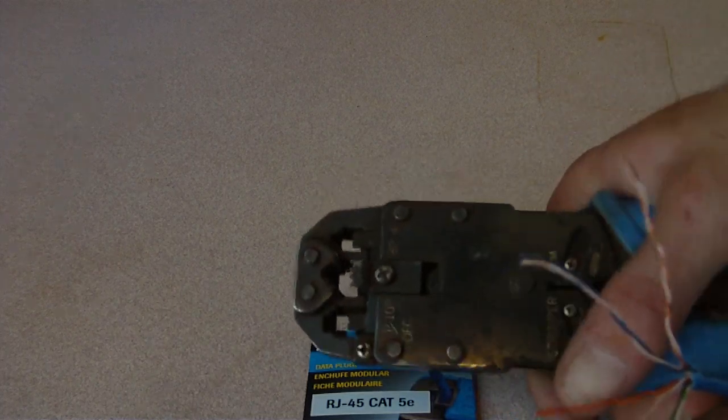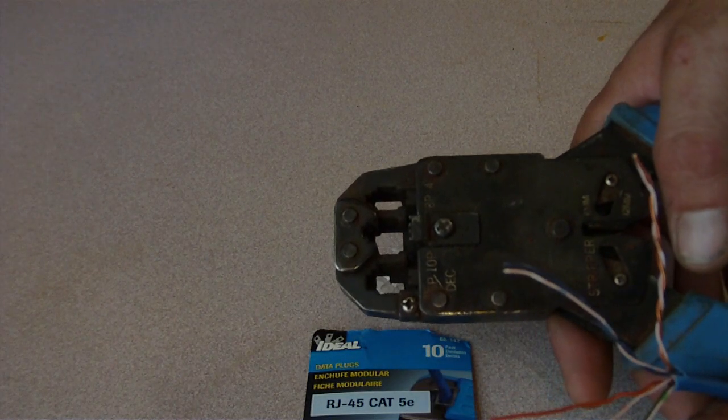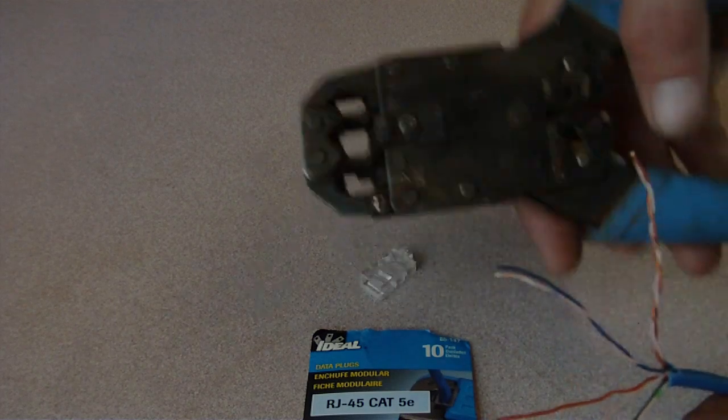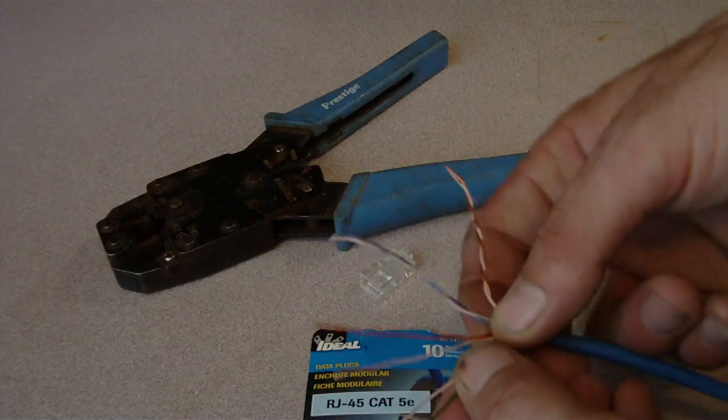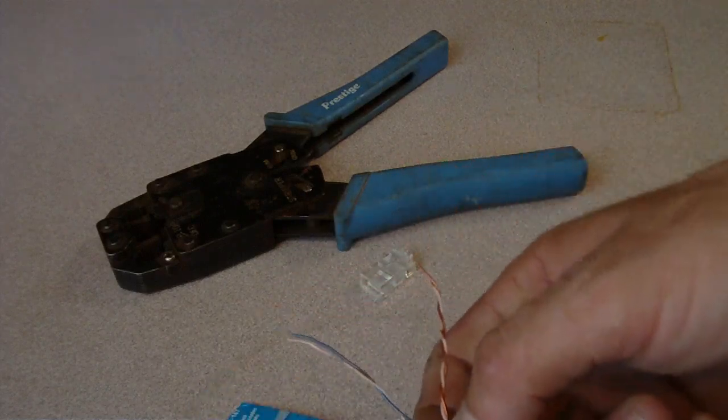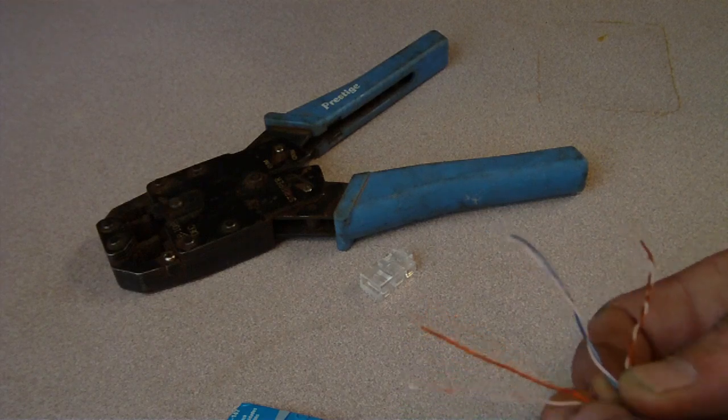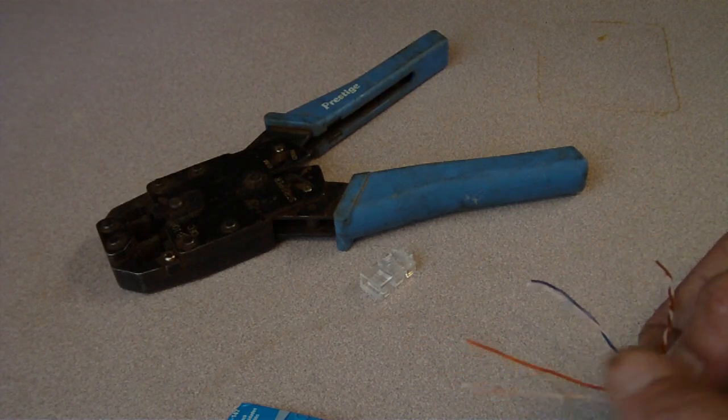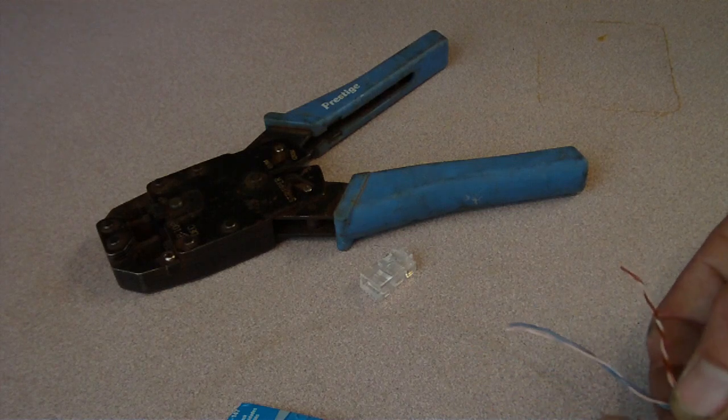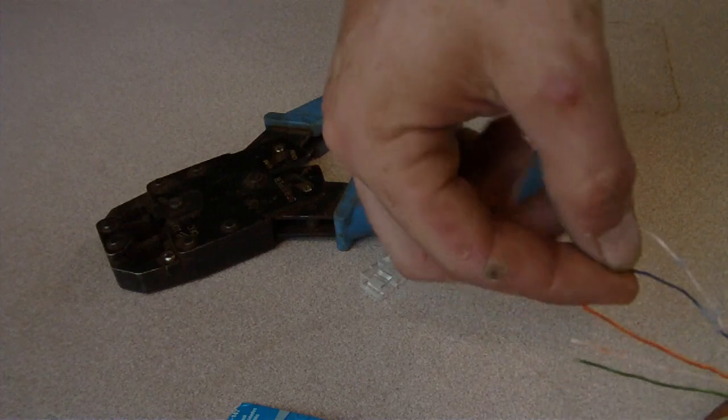This here happens to be a set that'll do three different kinds of phone type connections. So I'm working on getting my wires paired up for the A configuration, and it's showing me that I have to have my striped green first, and then my solid green, striped orange, solid orange, and then my solid blue wire.